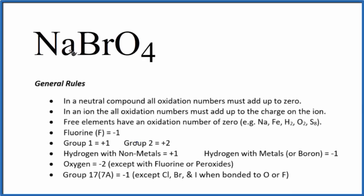To find the oxidation numbers for each element here in NaBrO4, this is sodium perbromate. We use these rules. There's no negative or positive after the compound, so that's a neutral compound. All the oxidation numbers are going to add up to zero.